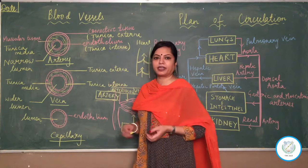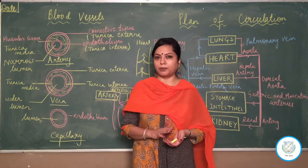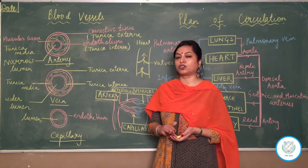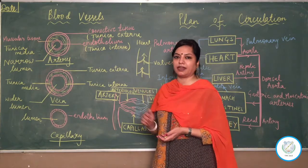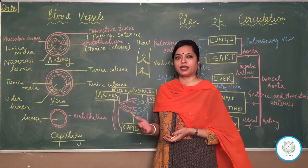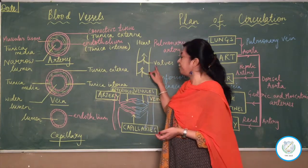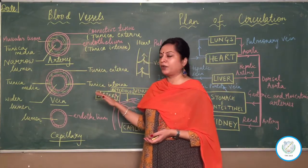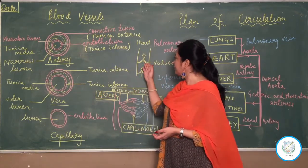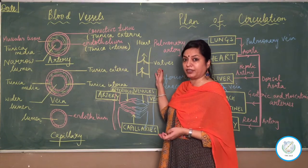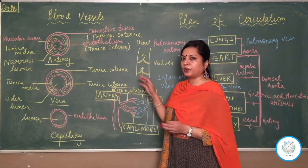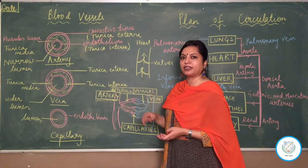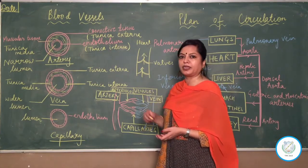Lymph vessels also often carry lymph against gravity, so there are chances lymph would take a backflow. Therefore, lymph vessels also have valves. If asked which other vessel has a structure similar to veins, the answer is lymph vessel. Two vessels in our body have valves: the vein, which carries blood, and the lymph vessel, which carries lymph — both to prevent backflow.